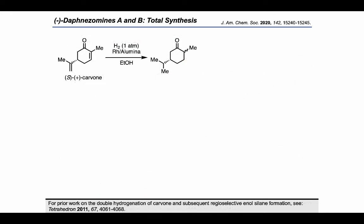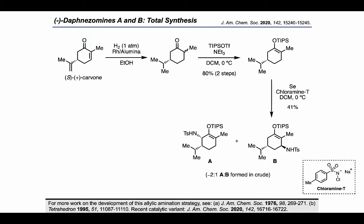In the synthetic direction, the authors started by hydrogenating both alkenes present in S-Carvone using the conditions shown, followed by the formation of the TIPS-enol triflate. Then they got ready to install the nitrogen present in the final target, which they did successfully using the allylic amination of Sharpless, employing selenium and chloramine T to obtain two products A and B in a 2-to-1 ratio favoring A.